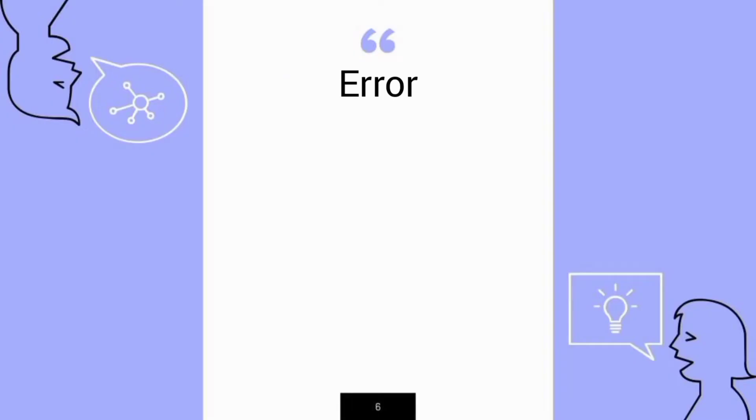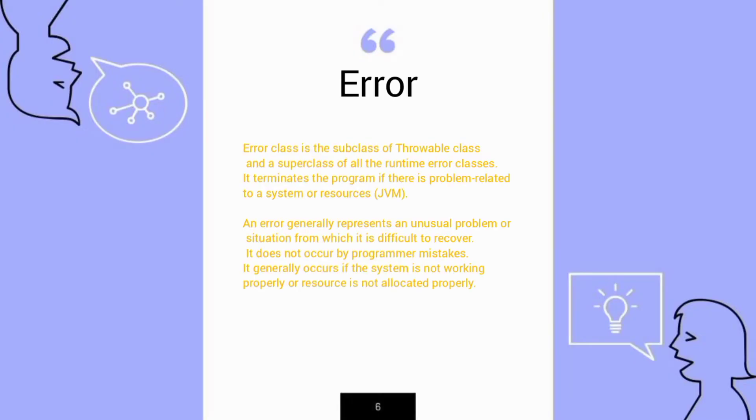An error generally represents an unusual problem or situation from which it is difficult to recover. It doesn't occur by programmer mistake. It generally occurs if the system is not working properly or the resources are not allocated properly, for example StackOverflowError, OutOfMemoryError, etc.